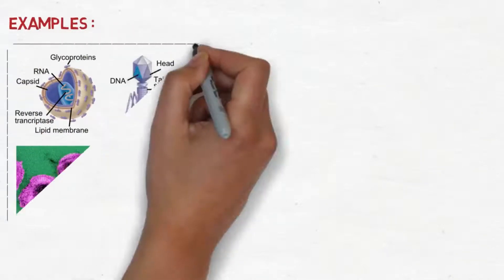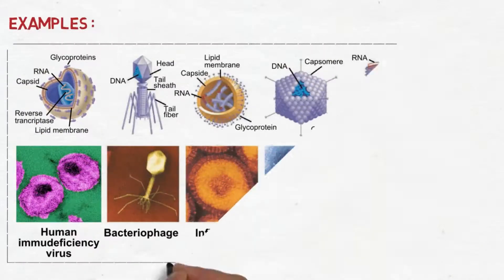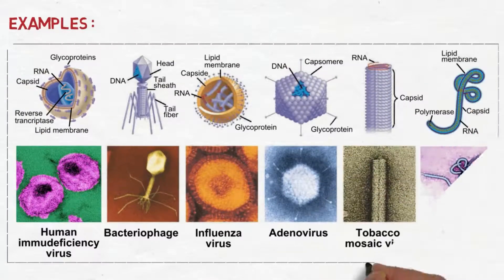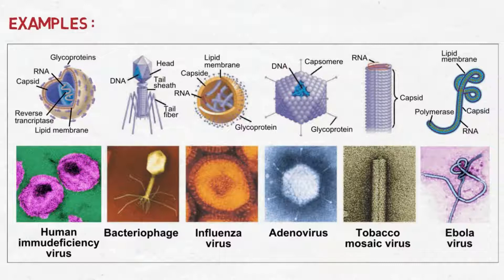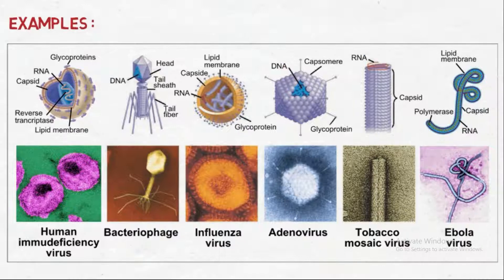Here are some examples of different structures of viruses. We can notice that the adenovirus is an unenveloped icosahedral virus, besides the tobacco mosaic virus that is also unenveloped but in a helical structure.